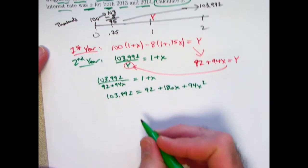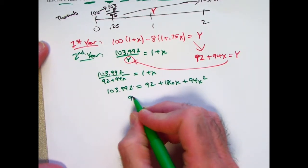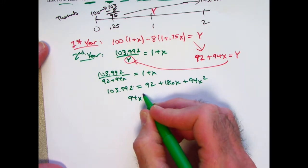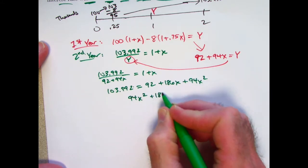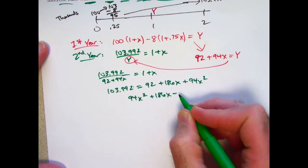Subtract 103.992 from both sides and rearrange. 94x squared plus 186 times x. Minus, what would it be? Minus 11.992 would equal 0.